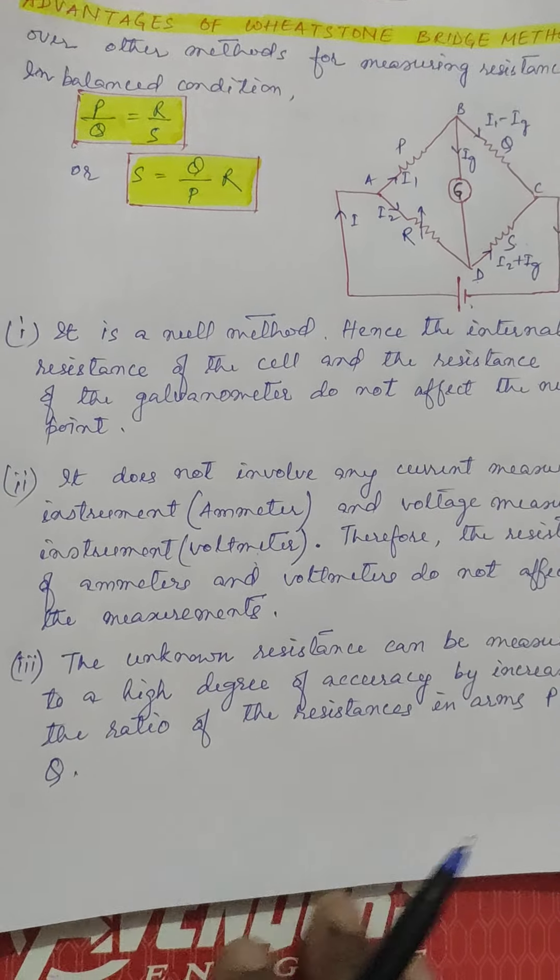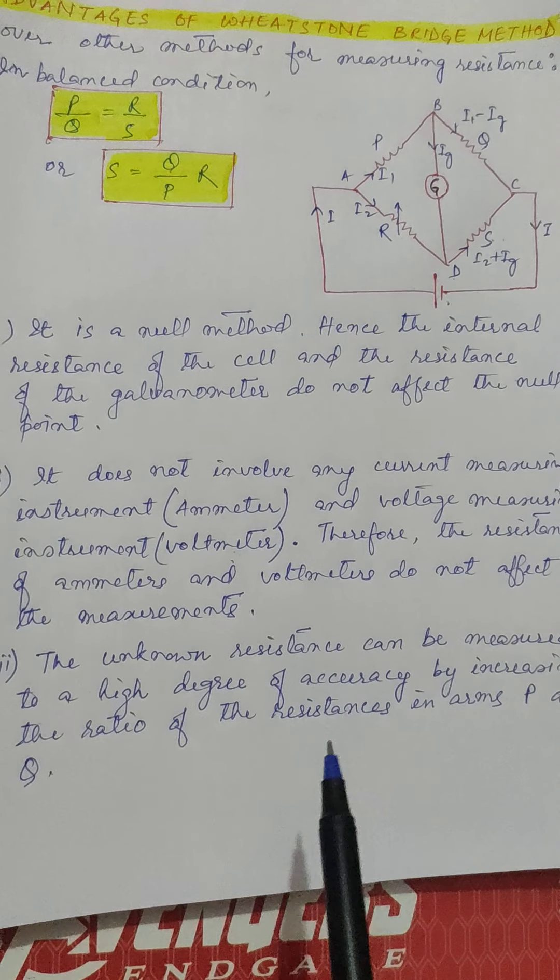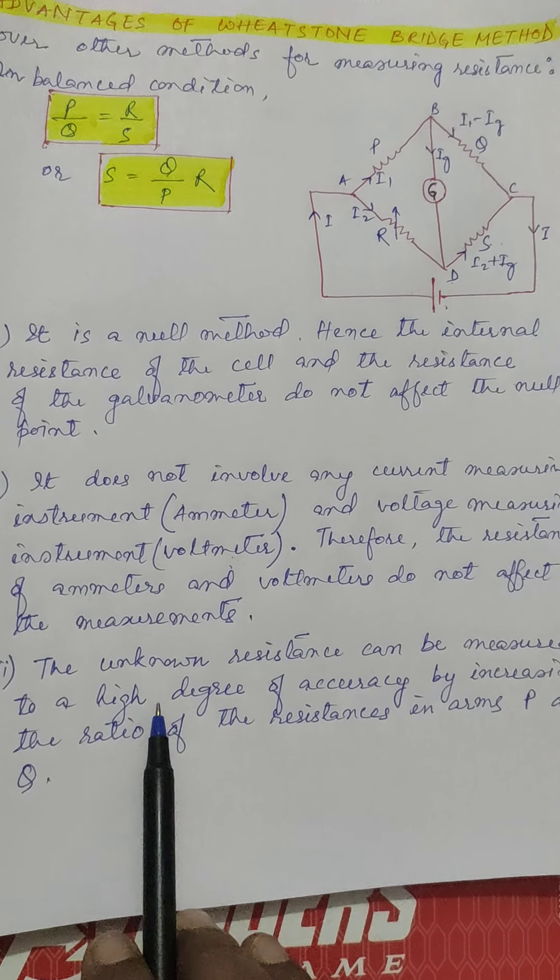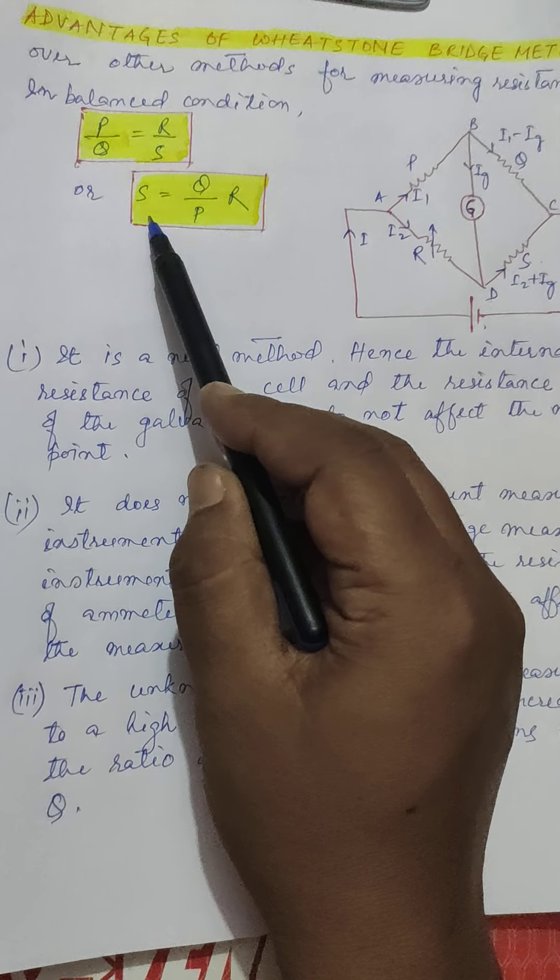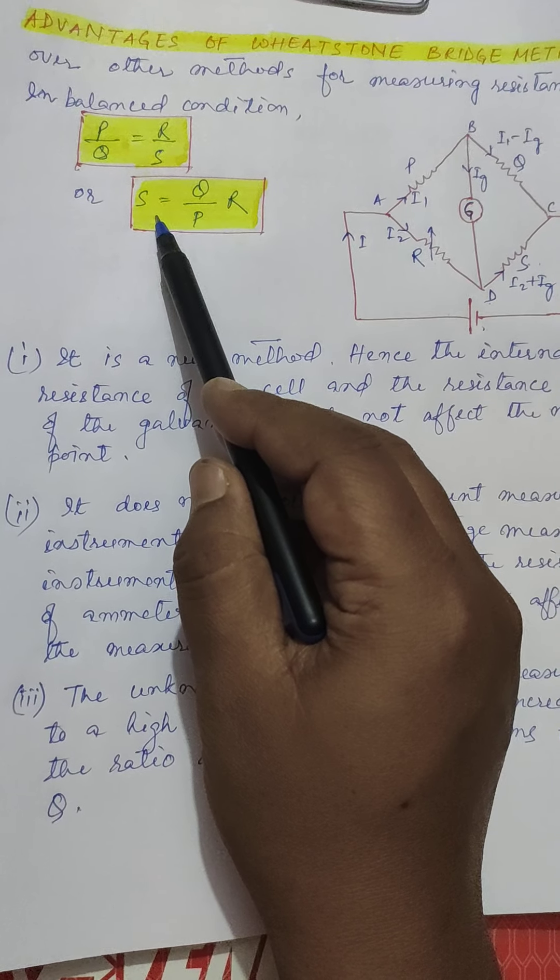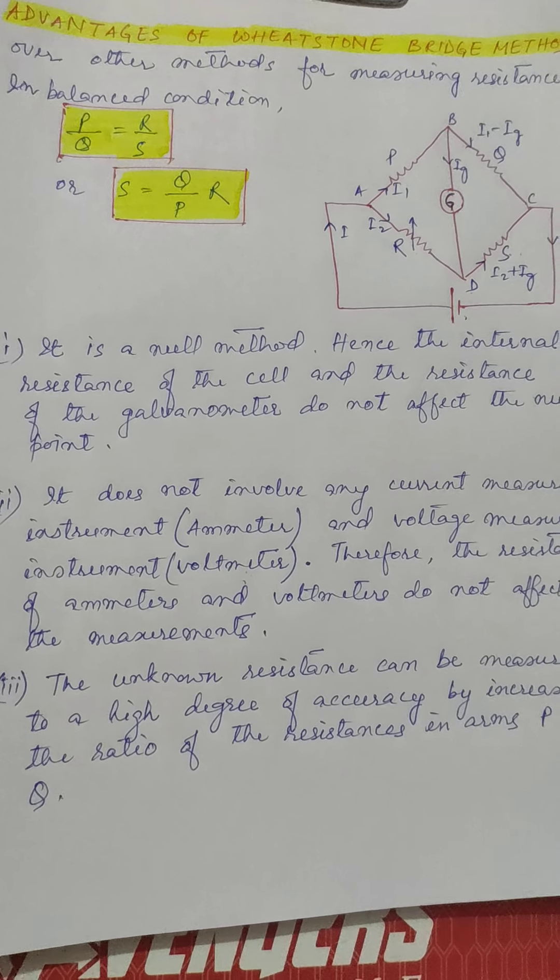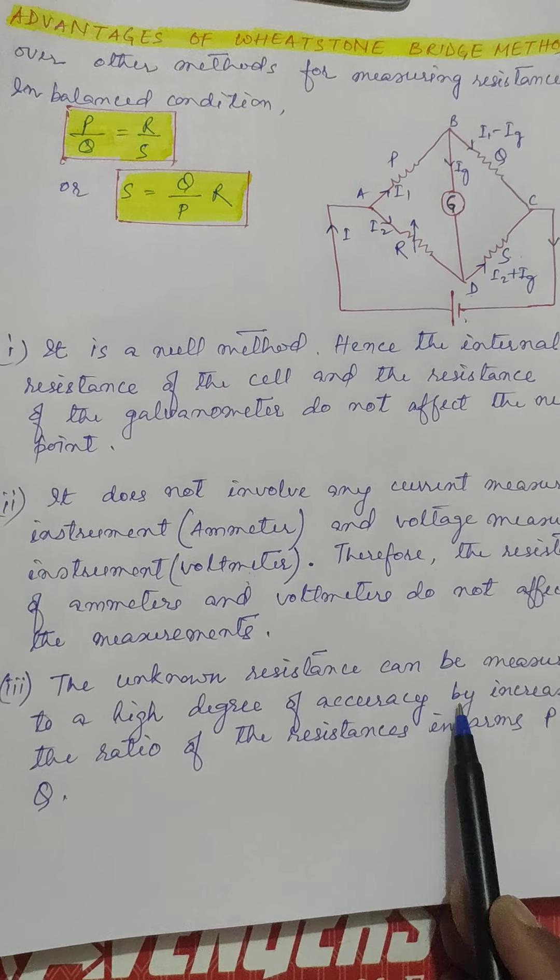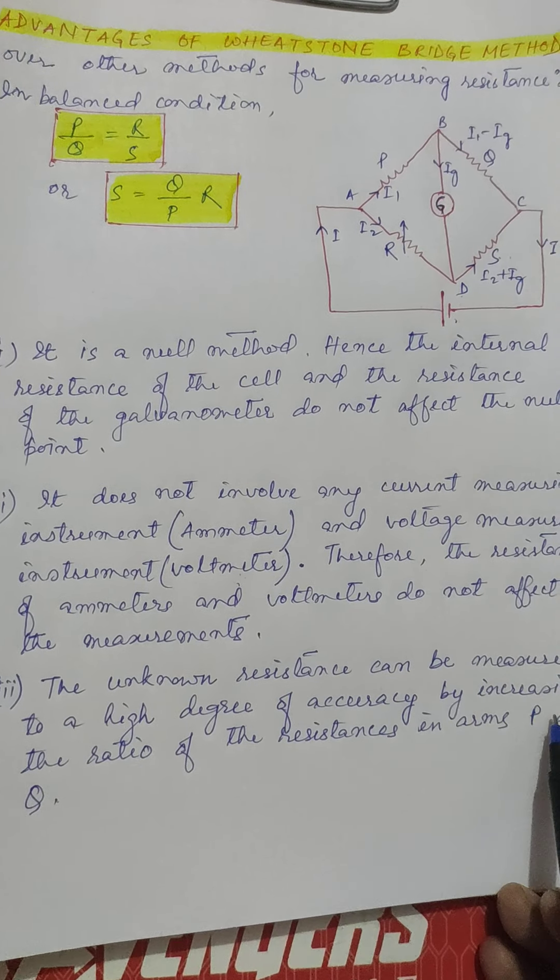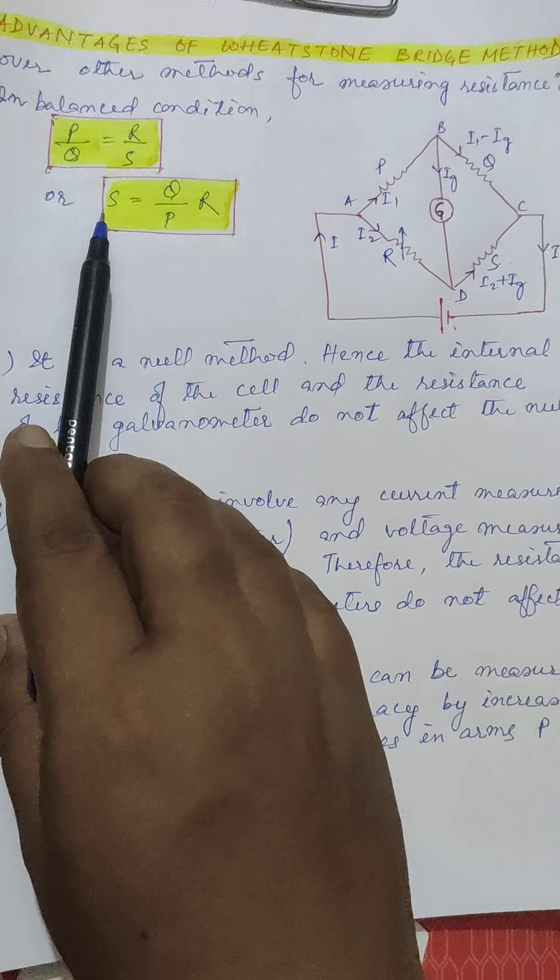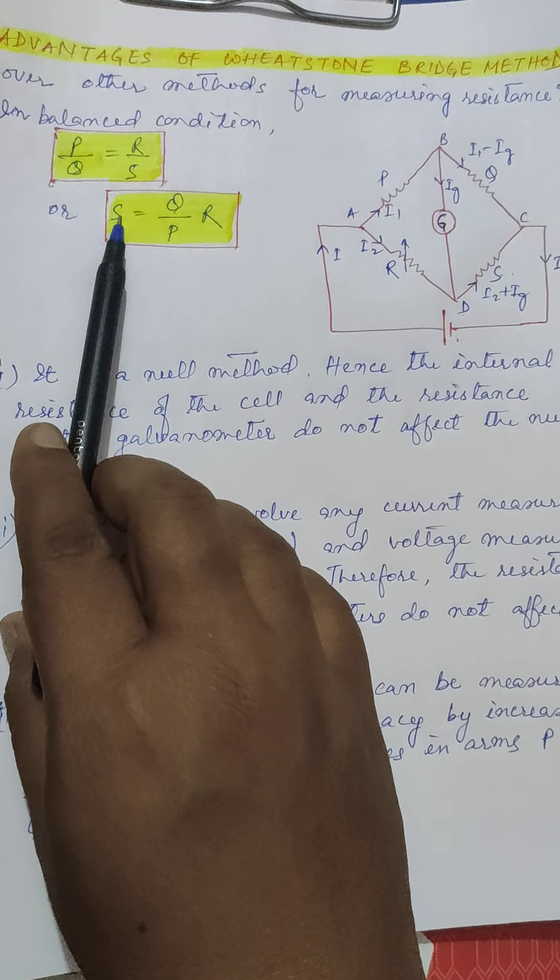And the last one more point can be discussed here. The unknown resistance is seen to be measured with a high degree of accuracy. This measurement will be very accurate. The value of S will be very accurate if the ratio of P by Q is kept very high. That is by increasing the ratio of the resistance in the arm P and Q,